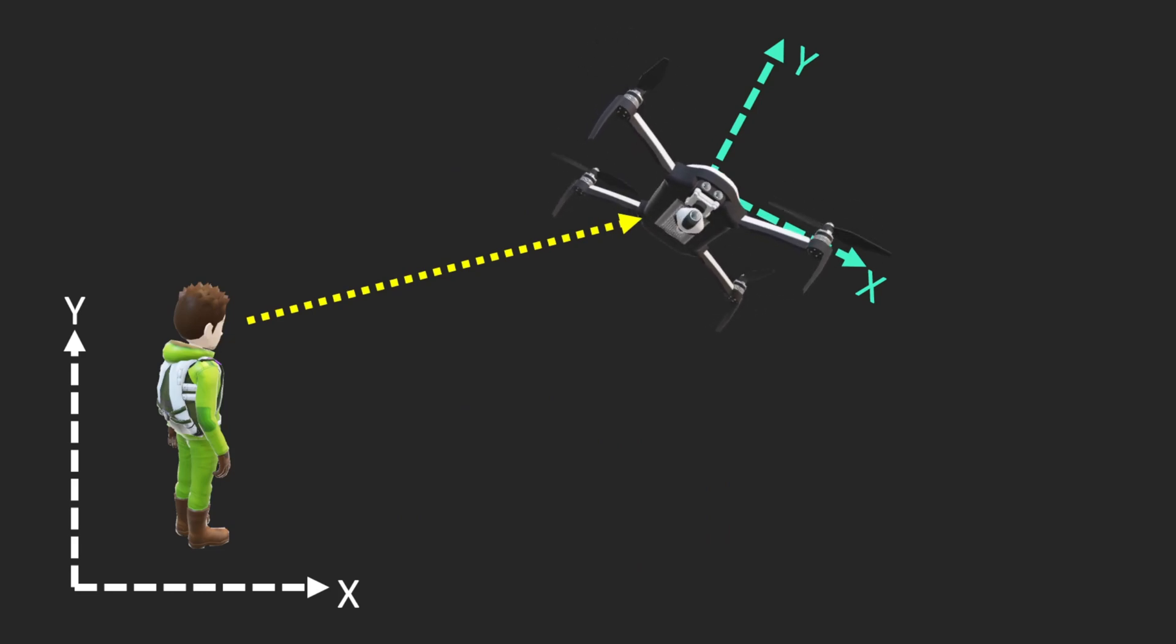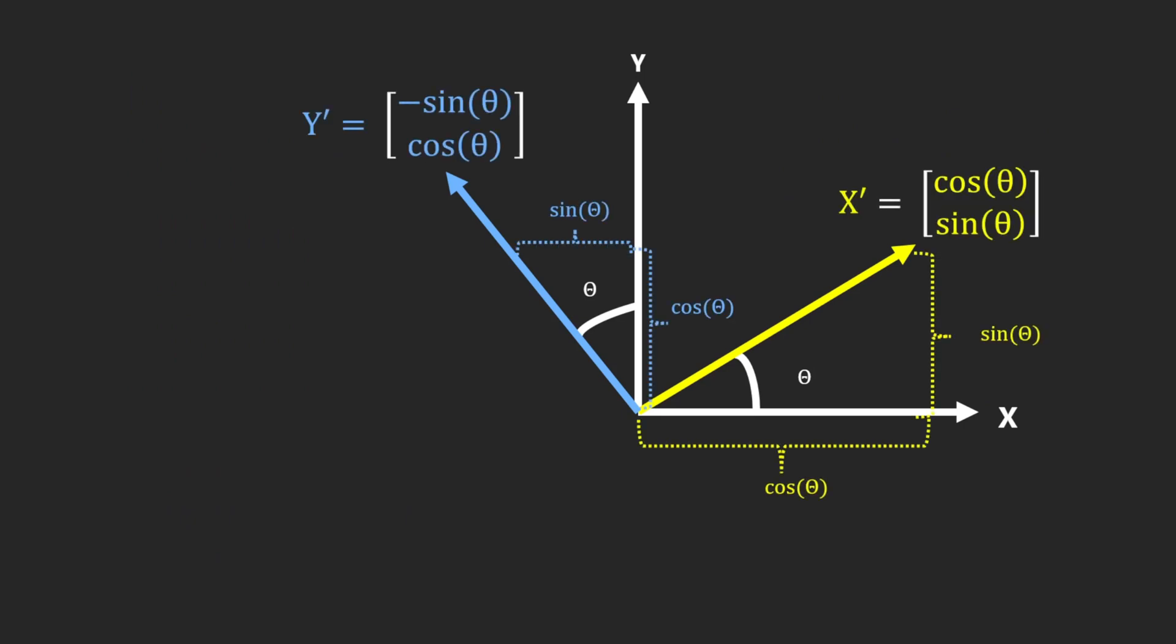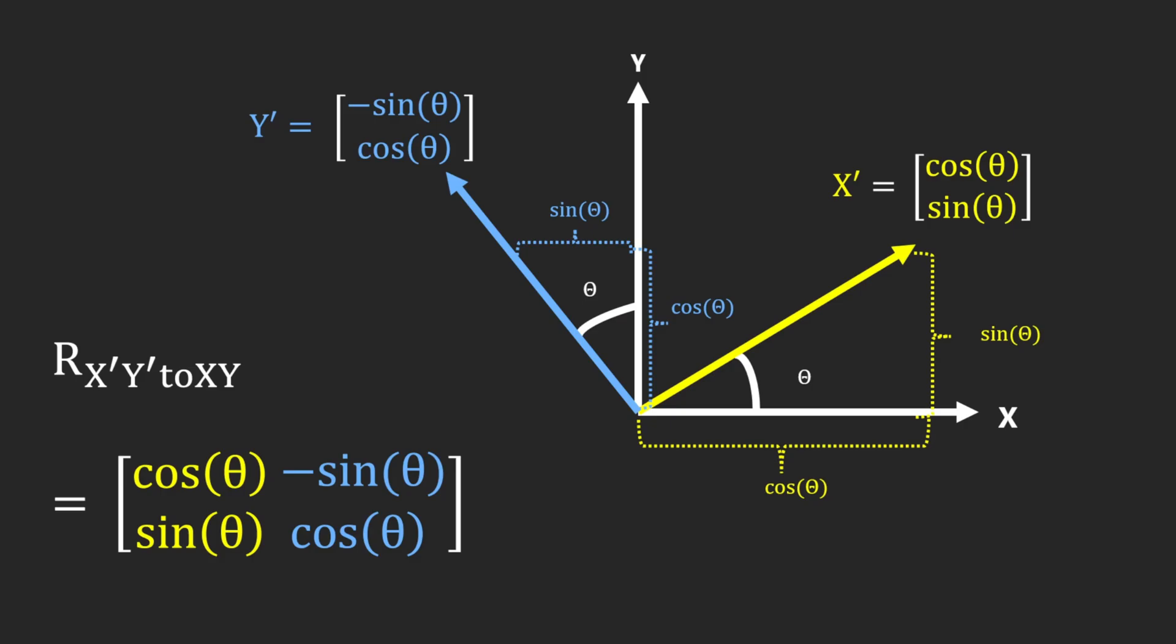The rotation matrix, unlike its name, doesn't even require crazy math. First, define your base coordinate system or ground frame. Then, identify what's the relative rotation of your target coordinate system. Perform high school level trigonometry tricks that you failed once. Then, copy-paste values in the right location. Then, that is your matrix.